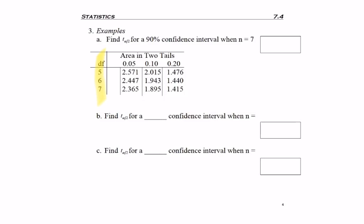So for my first problem, I'm trying to find t-alpha over 2. Remember, that's another word for, or I'm sorry, symbol for confidence interval, for a 90% confidence interval when n is 7. 90% confidence, alpha is 10%, or 0.10, two tail at the top. So that means I'm going to be looking over here.